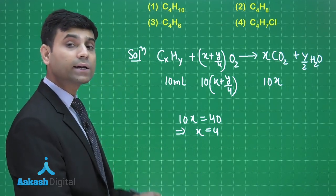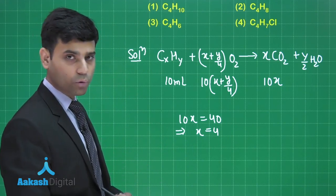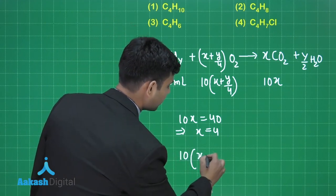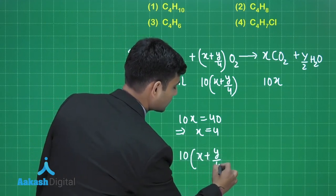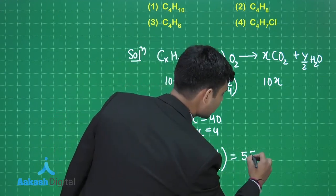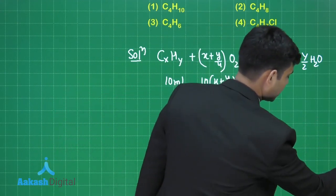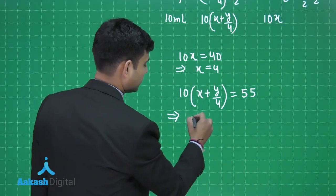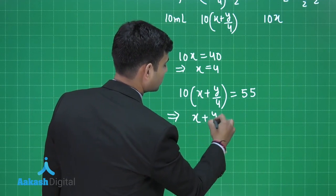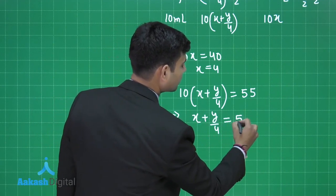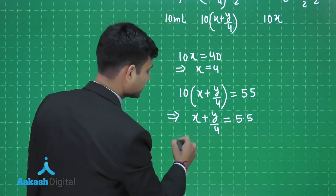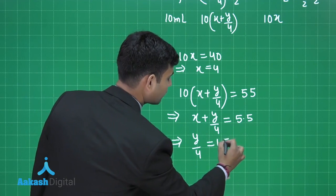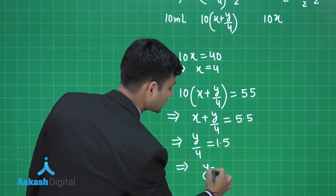Also, the question mentions that 55 ml of O2 is required for complete combustion. So 10(x + y/4) = 55, giving us x + y/4 = 5.5. The value of x is 4, so y/4 = 1.5, hence the value of y equals 6.